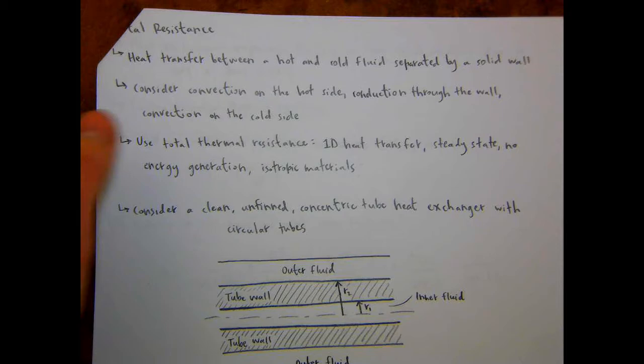On Wednesday we started talking about heat exchangers. We introduced different types of heat exchangers and said we're going to talk about only the concentric tube analysis for parallel flow and counter flow configurations. Then we revisited the total resistance concept: for heat exchangers you have convection, conduction through the wall, and convection again into the outer fluid, so you have to consider the total resistance of all three types of heat transfer.